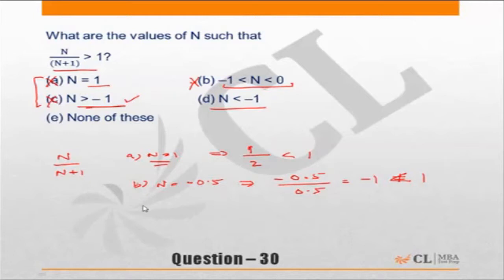Let's check choice D, since we've already eliminated choice C. Choice D is n < -1, so let me take n = -2.